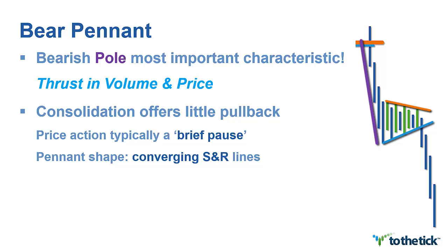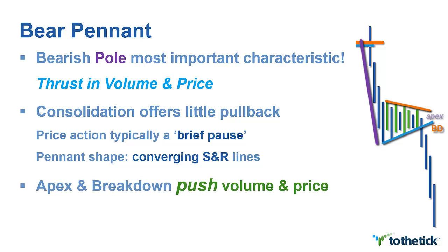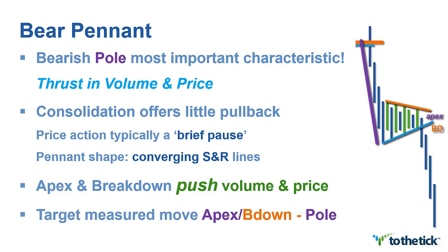We want to make sure the pattern maintains that converging support and resistance structure while price stays inside it. At the apex and the breakdown, either or, we're looking for a push in volume and price that says the bears have pushed through that midline and we're not getting back above it. We're looking to add an entire move — the same as the first — to one of these values to get another leg out of the pattern. You can use either the apex or the breakdown number. Take that number and subtract the value of your original pole, and then you will have your measured move target.